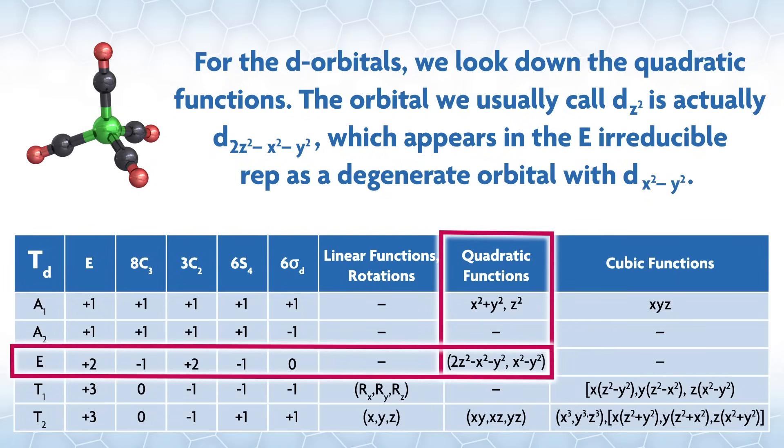For the d orbitals, we look down the quadratic functions. The orbital we usually call dz squared is actually 2dz² - x² - y², which appears in the E irreducible rep as a degenerate orbital with dx² - y².